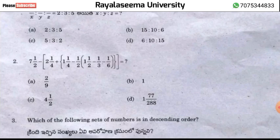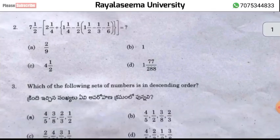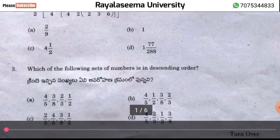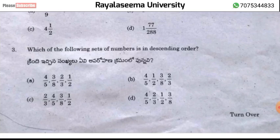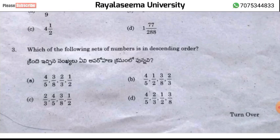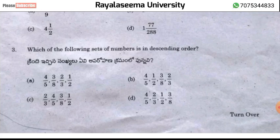After solving the fractions, we find the descending order. Converting to decimals: 4/5, 1/2 = 0.5, 3/8, and 2/3. The descending order is 4/5, 2/3, 1/2, 3/8, and the correct answer is option D.